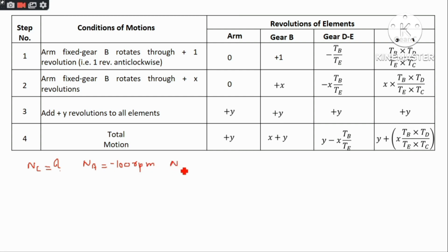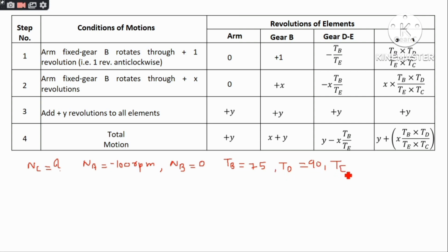Since gear B is fixed, NB equals zero. Given values: TB equals 75, TD equals 90, TE equals 45, TC equals 30. Substituting these values of TB, TD, TE, and TC into the expressions to solve for NC.